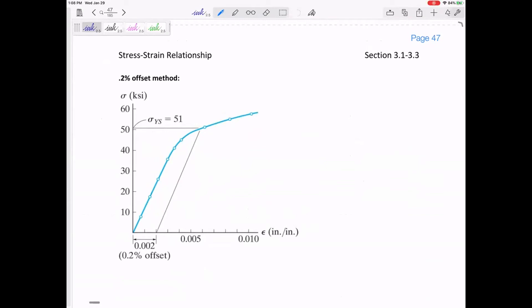So you know that some materials have a very sharp yield point, right? A very sharp point where it changes from the elastic to the yielding region.